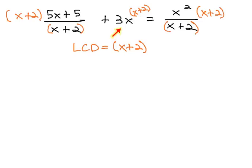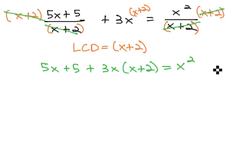Even though it wasn't a fraction, this is because we're multiplying by each term on both sides, whether it's a fraction or not. Now, we see the x + 2's divide out of the first fraction, leaving 5x + 5 + 3x times the (x + 2) equals the x + 2's divide out, leaving x².